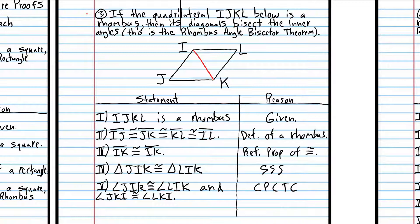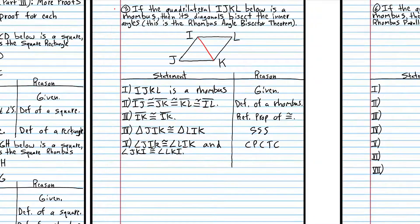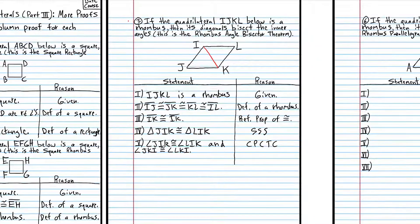We proved that this angle is congruent to this angle, and this angle is congruent to this angle. It turns out all four of those angles are congruent, but we're not really proving that. So that was number three.